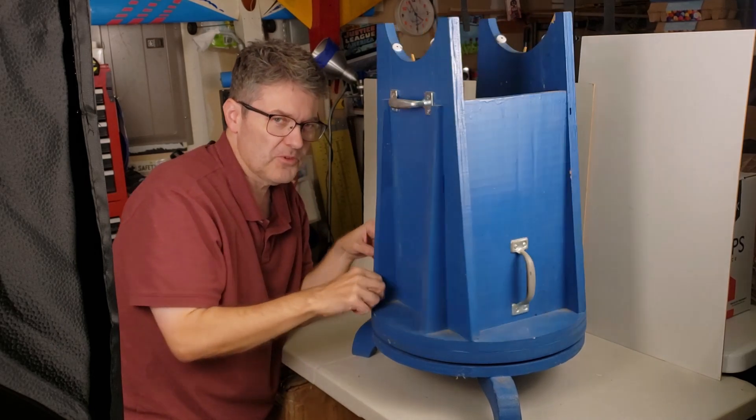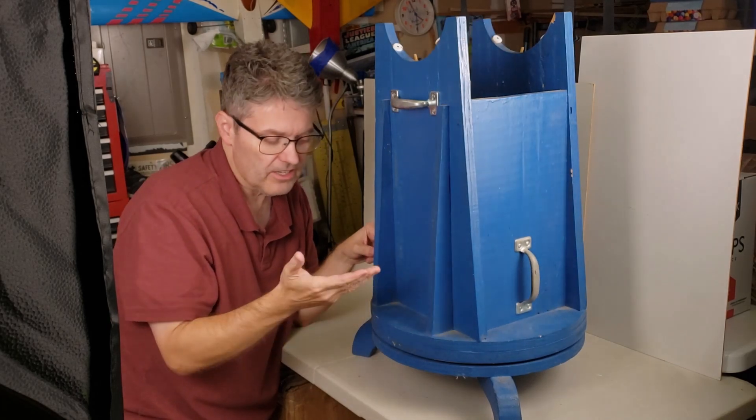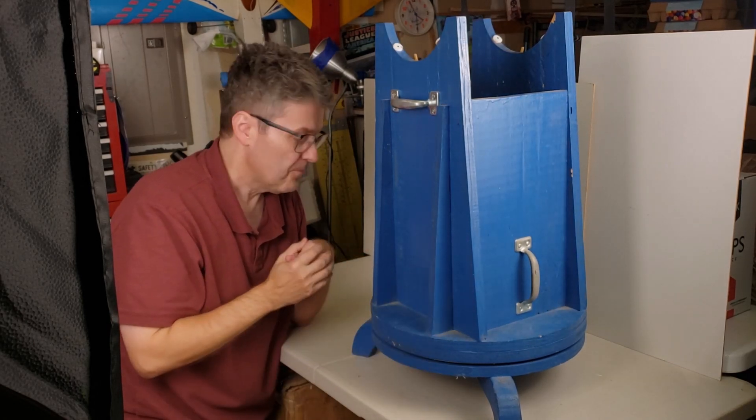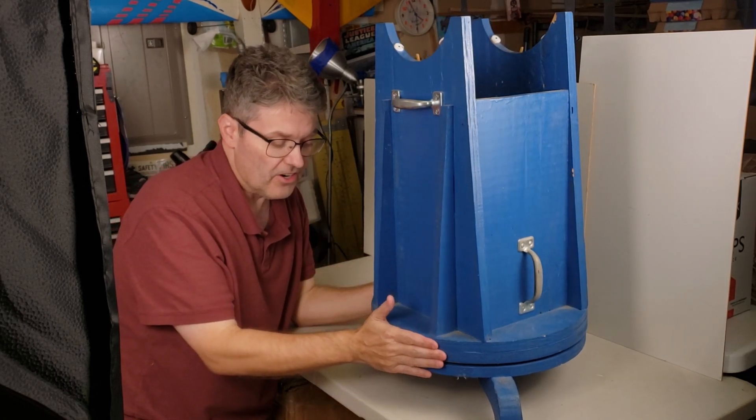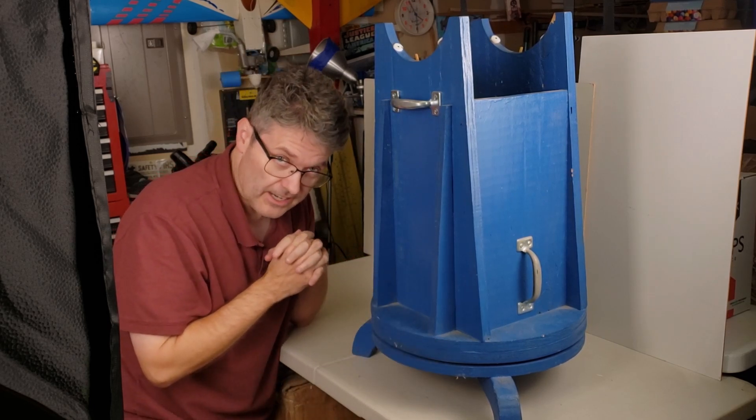You may notice this turns very, very smoothly, and that's because I'm using Teflon pads on a Formica surface. Now, one of the neat things about this are these circular pieces right here. Those are made from sink cutouts.